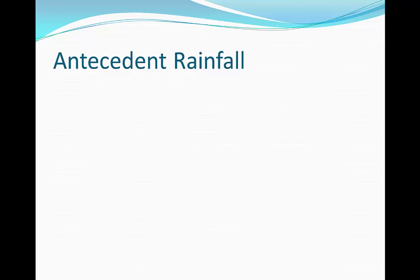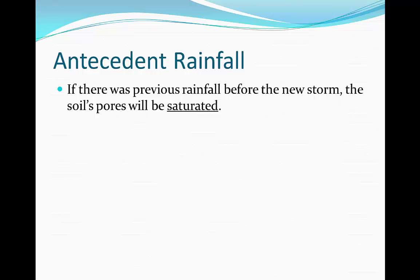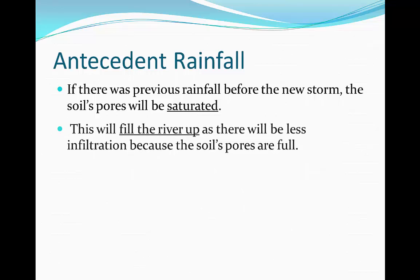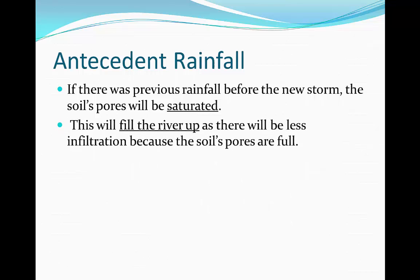Another factor affecting river discharge is the antecedent rainfall. Antecedent weather means weather that has happened prior to an event. So if there was previous rainfall before a new storm, the soil pools will already be saturated — already full up with water. If it rains again after a previous rainfall, the soil pools are already going to be full and there's not going to be much infiltration happening. As a result, the new water will fill up the discharge at a faster rate, causing the discharge to increase.